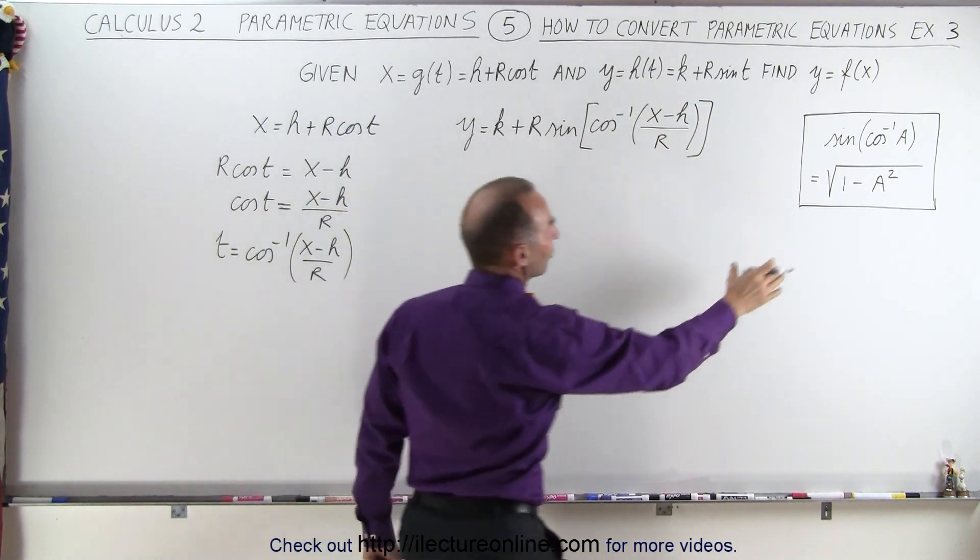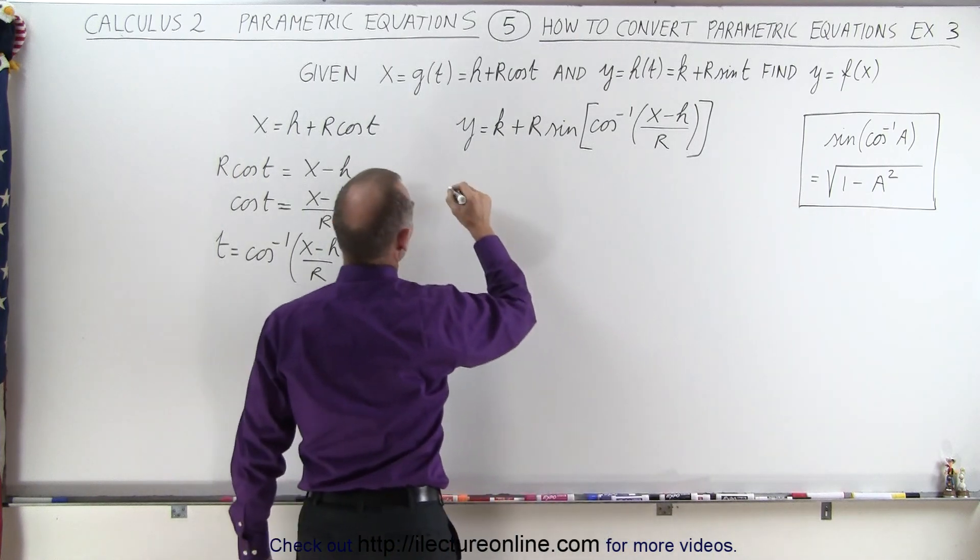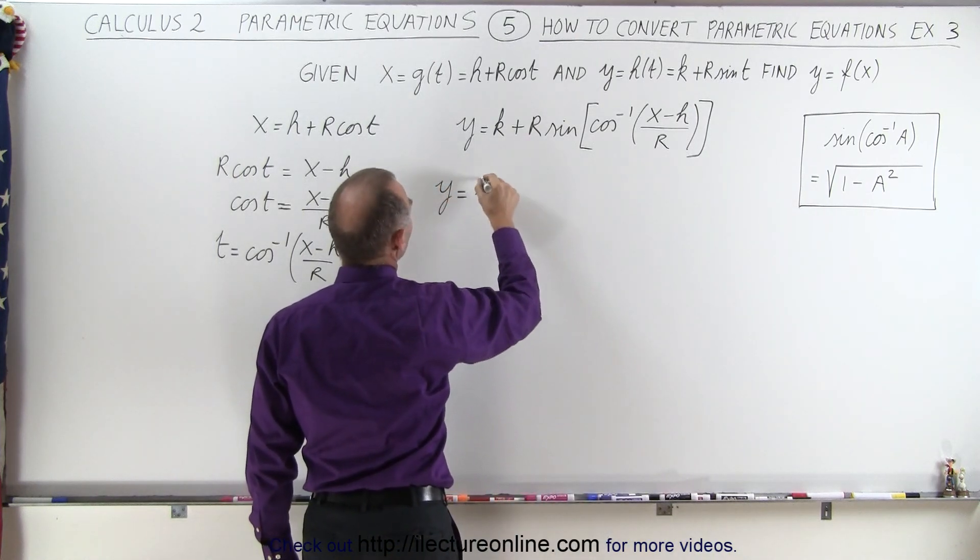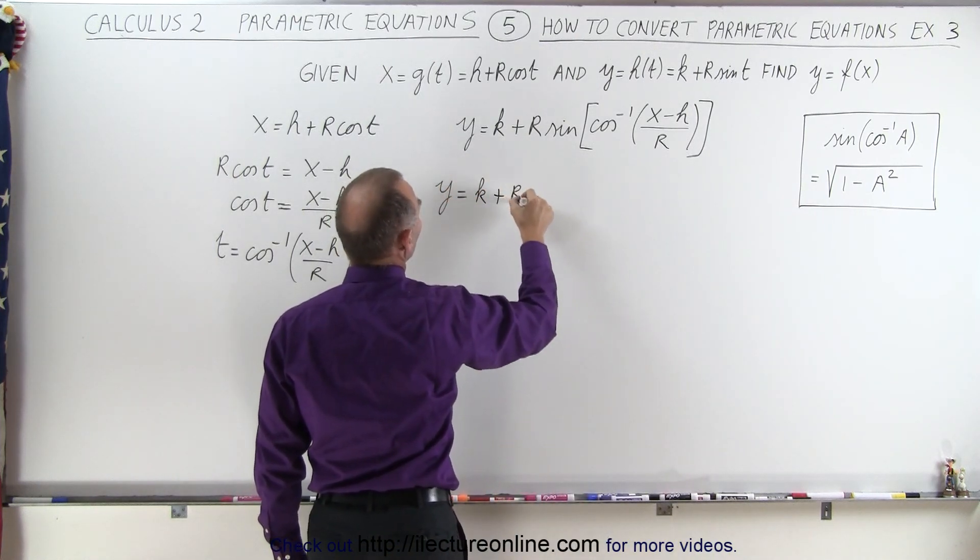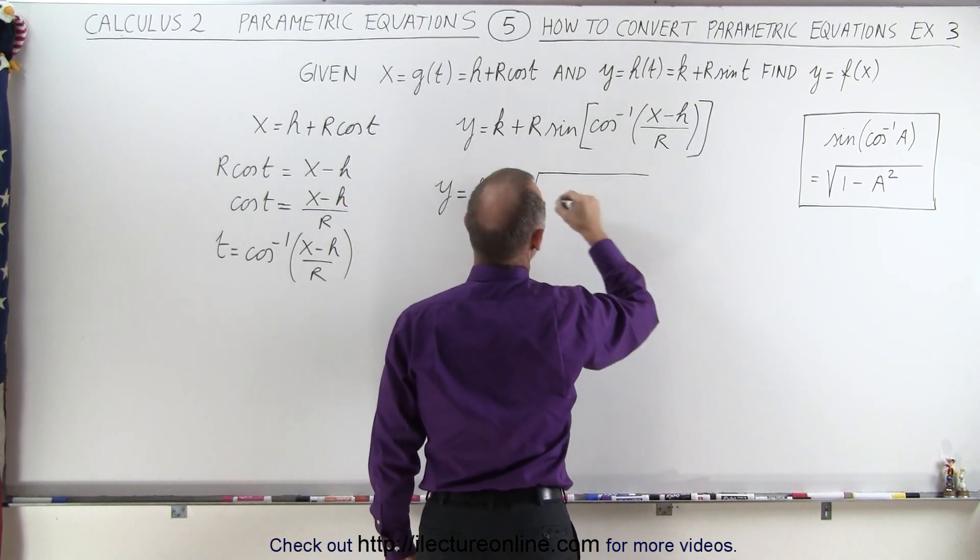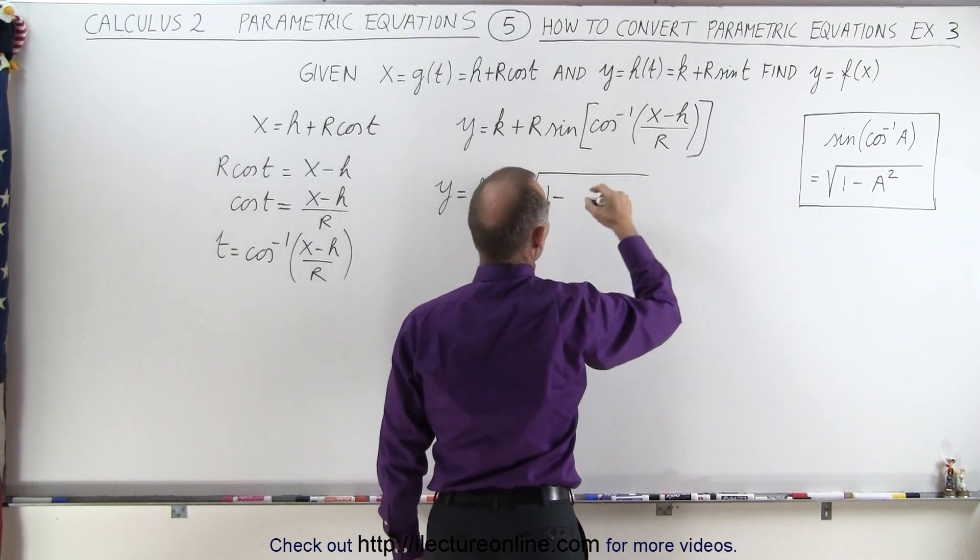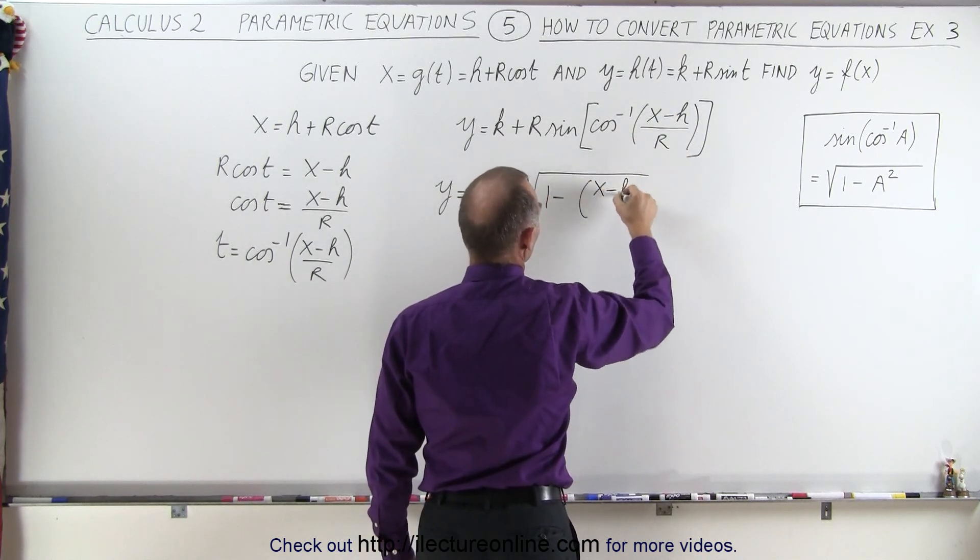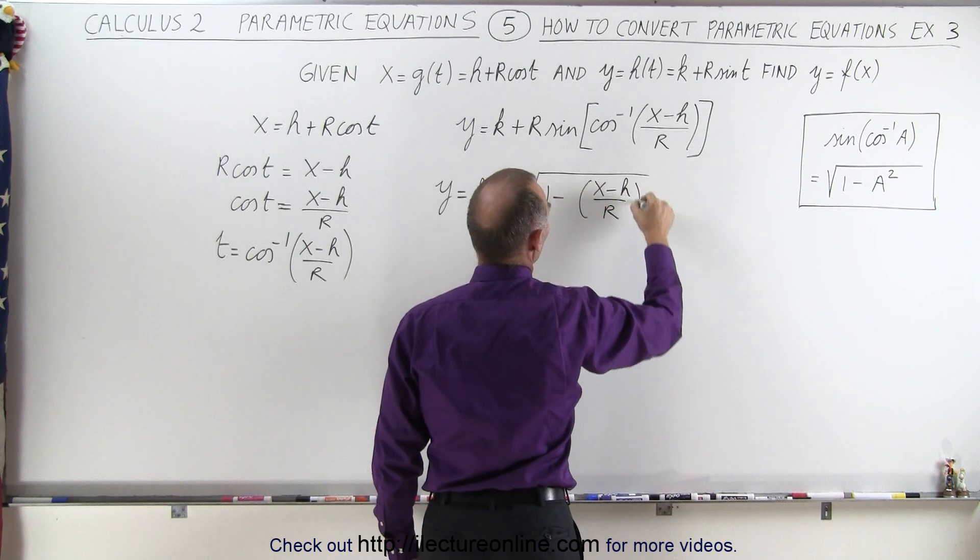And then we're going to utilize this identity right here. So therefore, we can write this that Y is equal to K plus R times the sine of the inverse cosine is equal to the square root of 1 minus this expression squared. X minus H over R quantity squared.